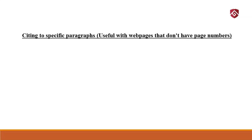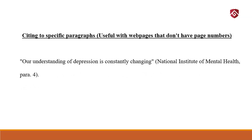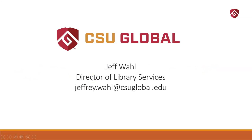Citing to specific paragraphs — useful with web pages that don't have page numbers. A lot of web pages don't have any page numbers, so if you want to be specific about where you found something on a web page: 'It came from the National Institute of Mental Health's website, para. 4.' That's an abbreviation for paragraph 4. I would find the paragraph where the quote came from and list the paragraph number. That's all I've got for you today. There are a few other things you'll run into for in-text citations, but these are the most common types. Hopefully that will help you out. Please ask me any questions if you have any, as always.